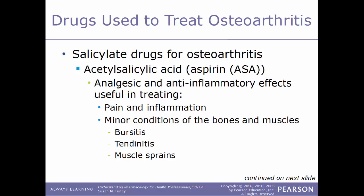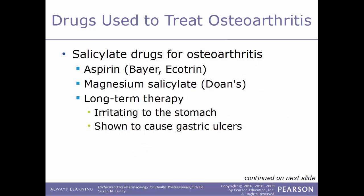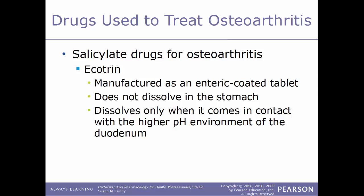Another type of drug used to treat osteoarthritis are salicylates. An example is ASA — acetylsalicylic acid — more commonly known as aspirin. These have analgesic and anti-inflammatory effects to treat both pain and inflammation, and are used for minor conditions such as bursitis, tendonitis, or muscle sprains. Common examples include aspirin such as Bayer or Ecotrin, and magnesium salicylate sold under the trade name Doan's. With long-term therapy, this drug class can be irritating to the stomach and cause gastric ulcers. Ecotrin is manufactured as an enteric-coated tablet that dissolves only in the higher pH environment of the duodenum, the first part of the small intestine.